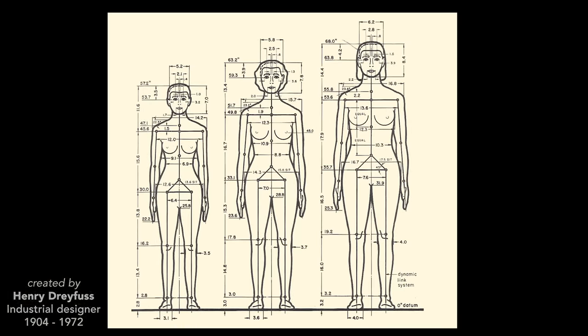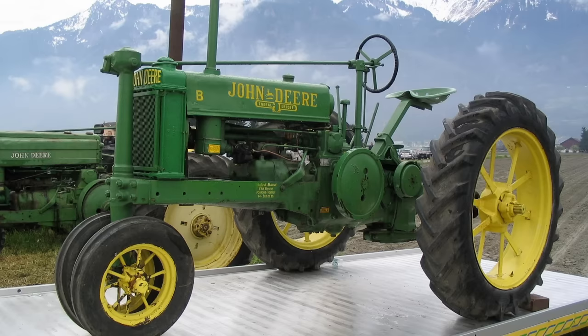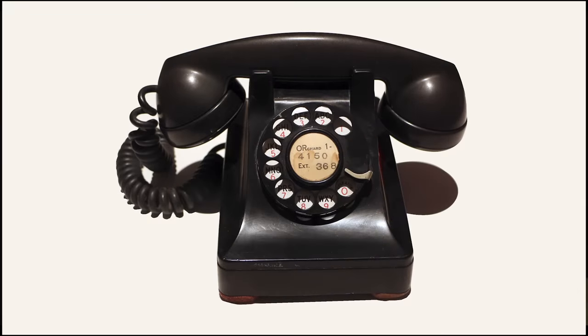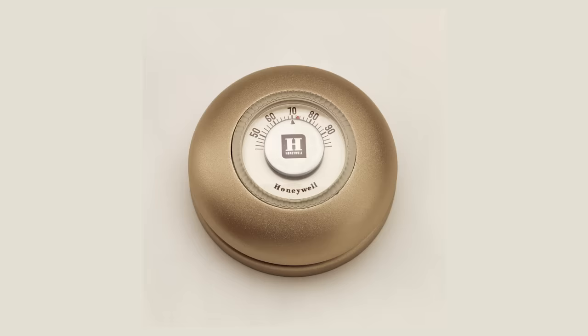Dreyfus used these figures to create John Deere tractors, locomotives, and clocks. He designed the iconic Model 302 telephone and the round Honeywell thermostat.